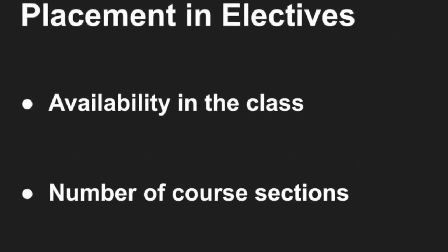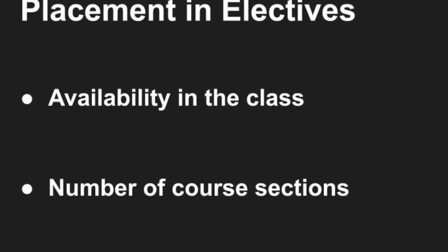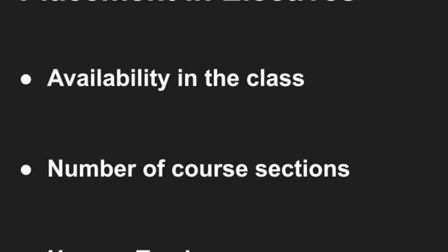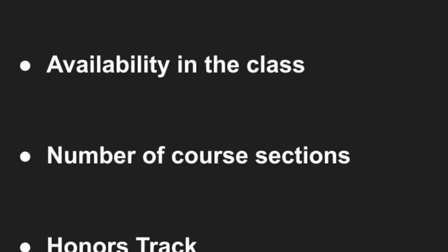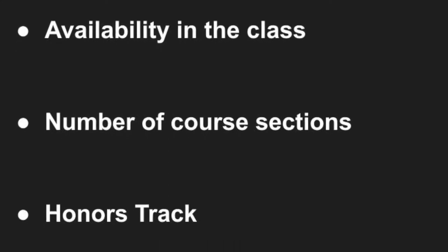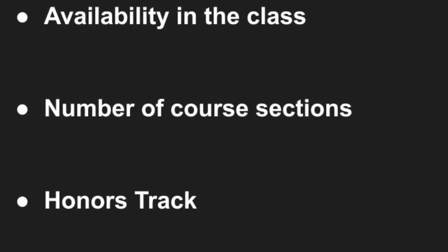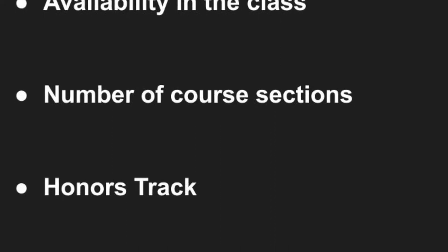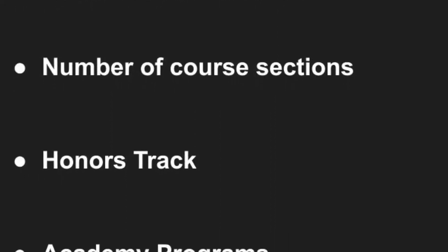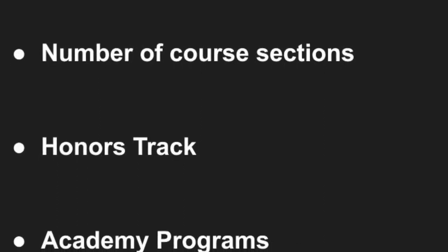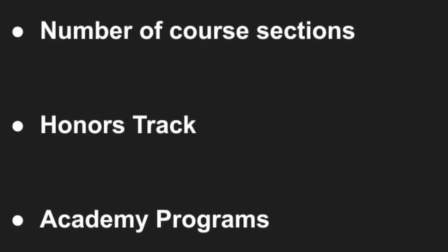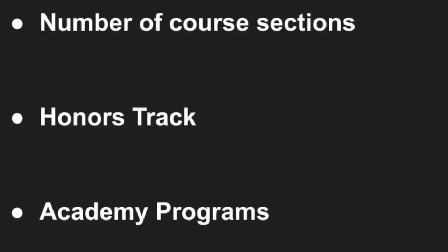It is important to note that we strive to give students their top elective choices, although we cannot always guarantee it. Several factors can impact how a student is placed in elective classes — for example, availability in the class, number of course sections available, whether or not a student is on the honors track or in an academy program, and the design of our master schedule. We ask for your understanding in this process.